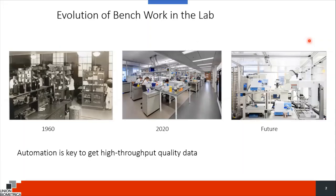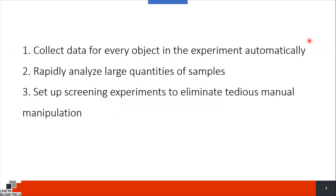On this slide, I put three different pictures of how the lab looks in 1960, in 2020, and how I wish it would look in the future. The first two pictures are similar — there are some lab benches, and most importantly, there are people. I believe in the future, most experiments will be done by automation and in cloud labs and will not involve manual labor. Automation is key to get quality data, remove errors, and enable more experiments and to test more ideas. The goals are to collect data for every object automatically, rapidly analyze large quantities of samples, and set up screening experiments to eliminate tedious manual manipulation.